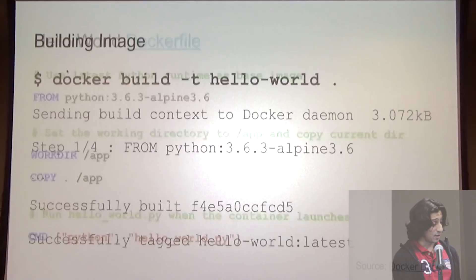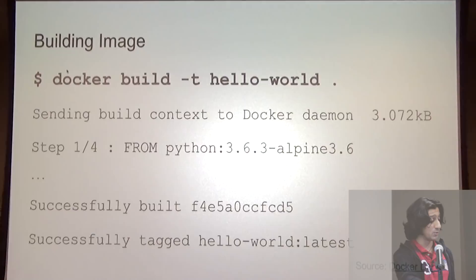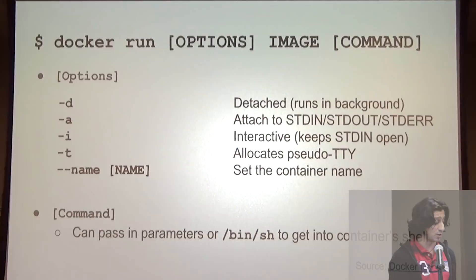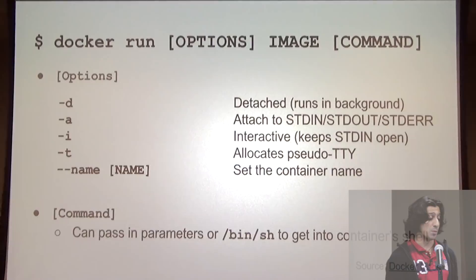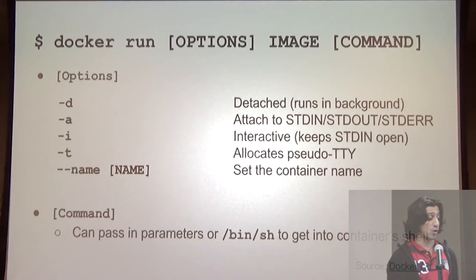Those are the steps to build the image, create a container, and restart that container. The docker run command is the one you'll use the most. We can use -d to run it in detached mode, attach stdin/stdout/stderr, make it interactive with -i, and name our container with --name. If we ever want to get into the shell of our container, we can pass bin/sh or bin/bash after the docker run command to get to that prompt.